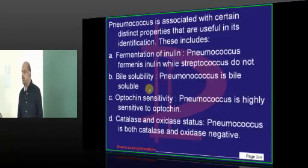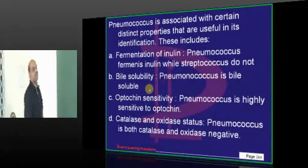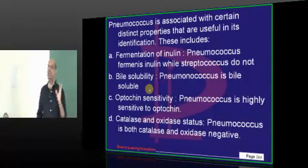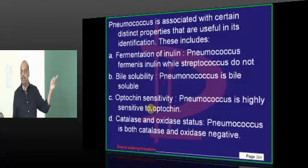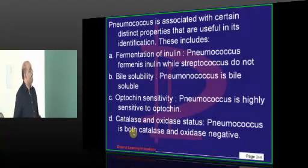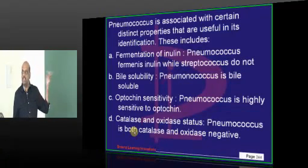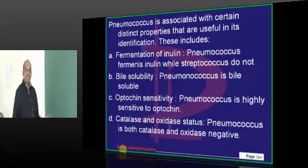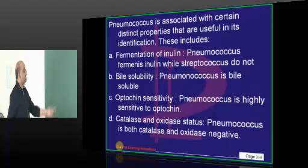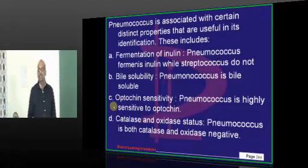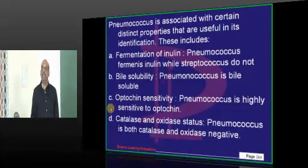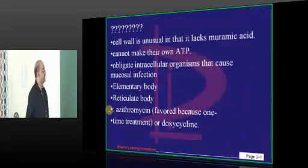What are the important features of pneumococcus? Classical traditional question. First, inulin fermentation — pneumococcus ferments inulin, its brother Streptococcus pyogenes does not. Bile solubility — pneumococcus is soluble in bile. Optochin — sensitive to optochin. Catalase — both catalase and oxidase negative is the pneumococcus. Microbiology made ridiculously easy — you need to remember these facts.